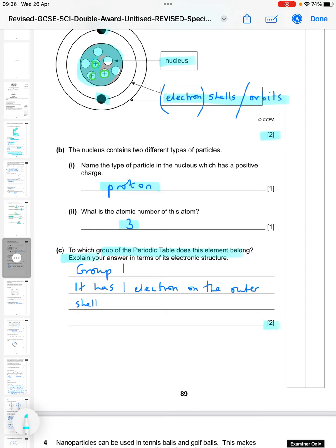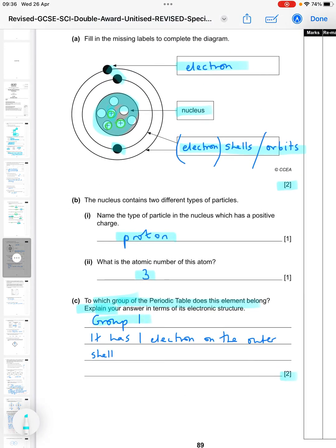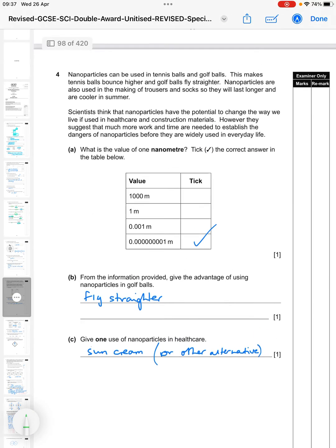So to which group of the periodic table does this element belong? Explain your answer in terms of its atomic structure. So this type of question you get two marks - one for stating it and one for explaining. So it's in group one, and the reason is it has one electron in the outer shell. So you see here this single electron on the outer shell means it is group one.